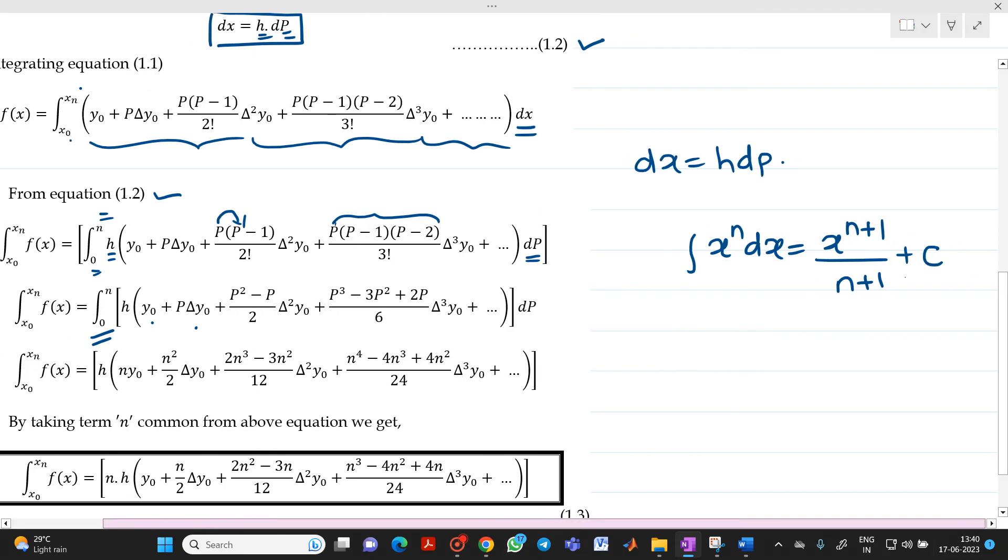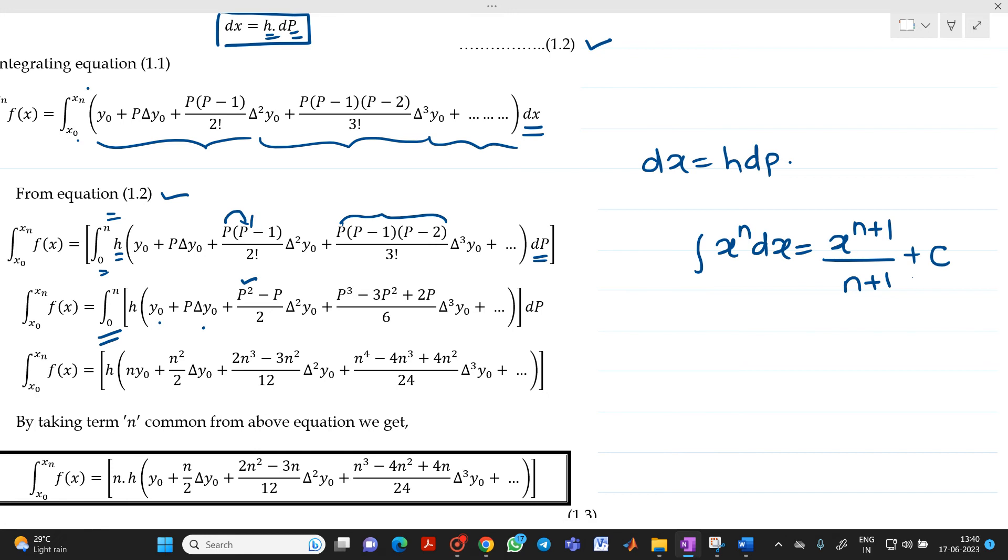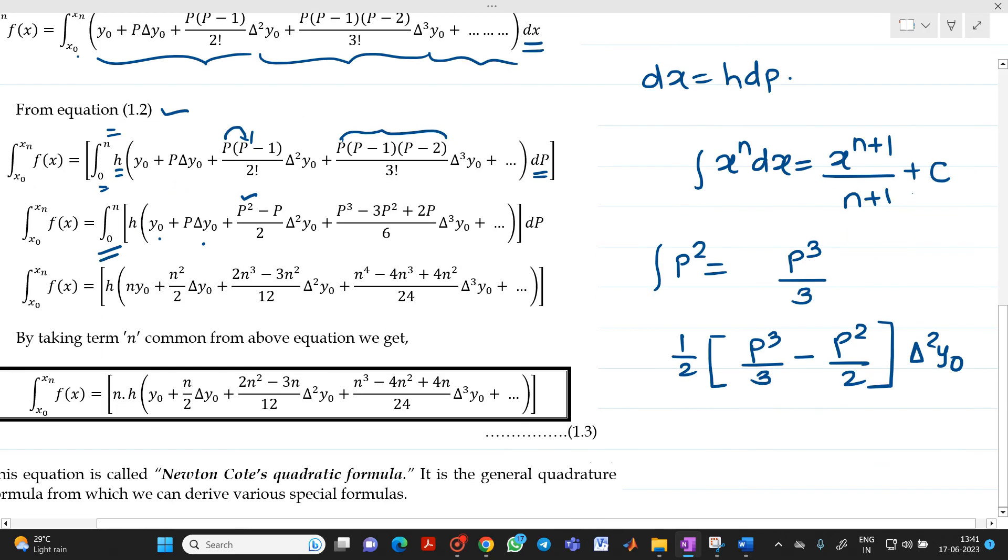If you go for this, integration of p square will be p cube upon 3. 1 by 2 will be outside. Integration of p square will be p cube upon 3 minus integration of p which is p square upon 2 into delta square y0. If you do this multiplication, you will get 12 at the denominator. If the limits are from 0 to n,